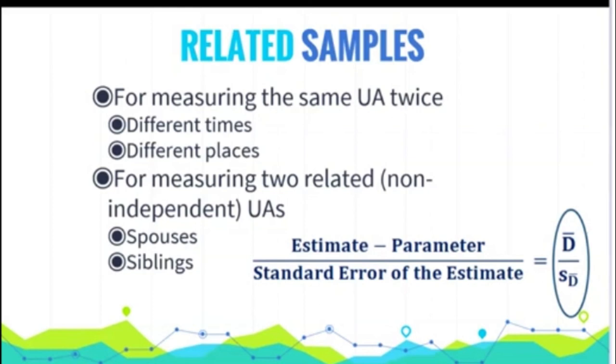Right? So the matched subjects, slightly different. You're going to have things like spouses or siblings. So you do have two people for every different score.